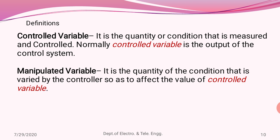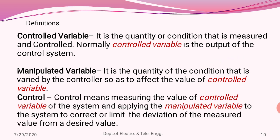The manipulated variable is a kind of variable in the control system that can be adjusted depending upon the requirement. Combining controlled variable and manipulated variable, control means measuring the value of the controlled variable of a system and applying the manipulated variable so as to correct or obtain a normal recommended level as per the requirement of the system.